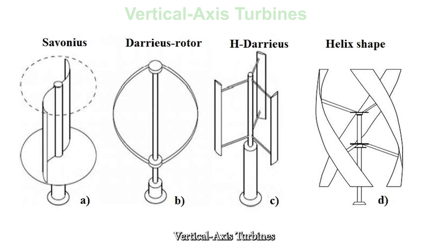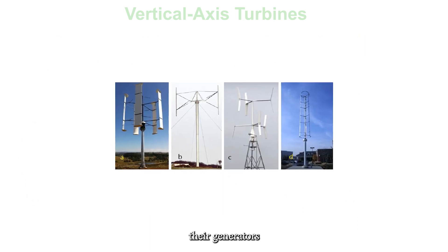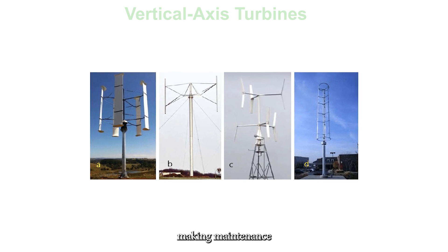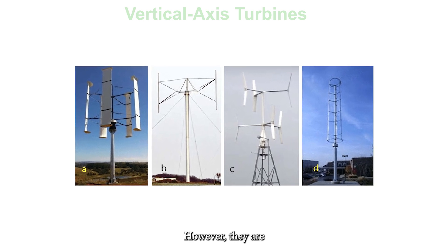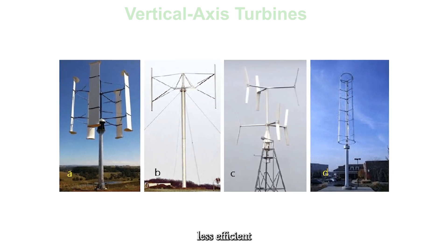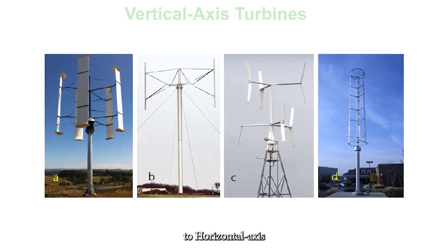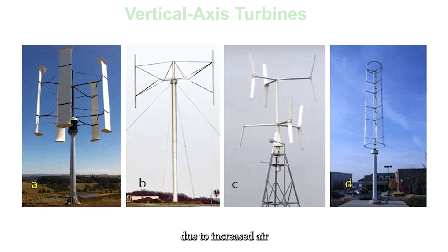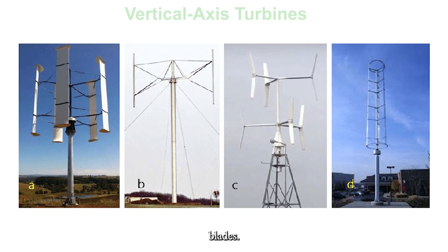Vertical Axis Turbines generally have their generators located near the ground, making maintenance easier. However, they are less efficient compared to horizontal axis turbines due to increased air drag on the rotor blades.